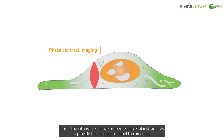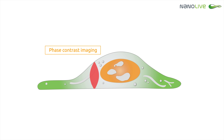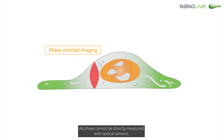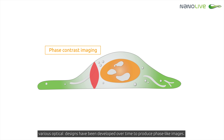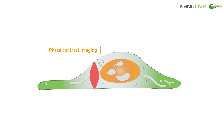Phase imaging uses the intrinsic refractive properties of cellular structures to provide the contrast for label-free imaging. As phase cannot be directly measured with optical sensors, various optical designs have been developed over time to produce phase-like images.